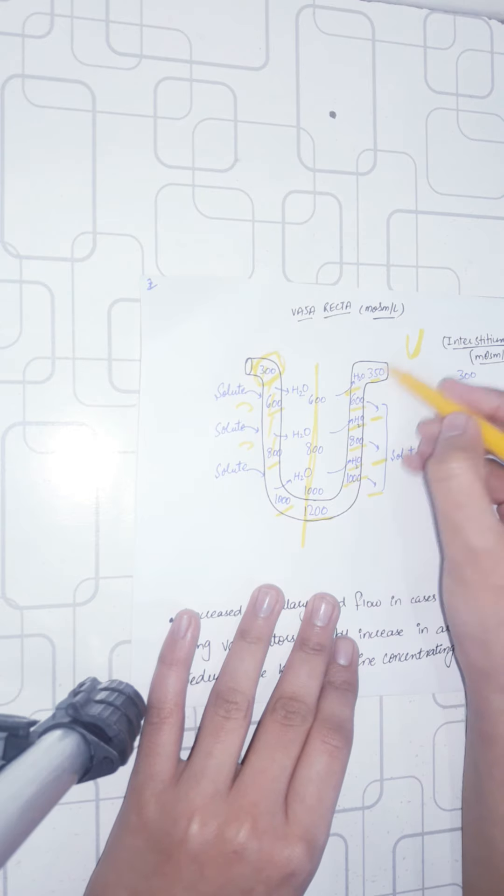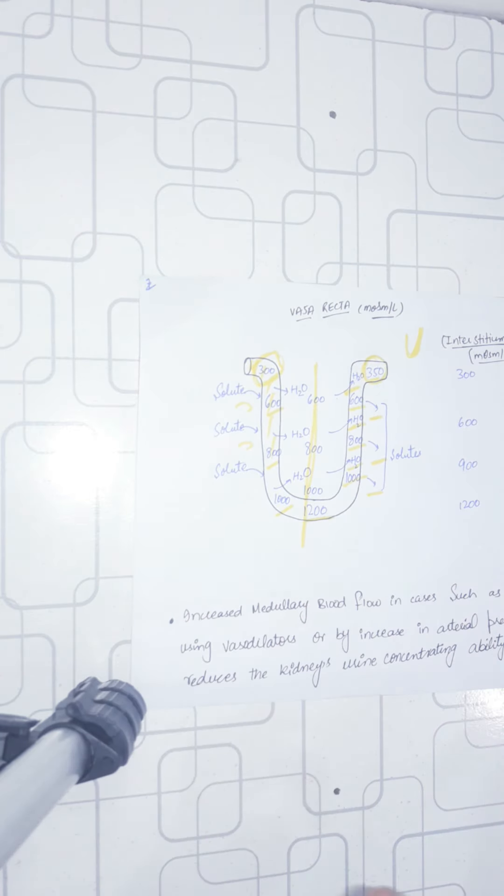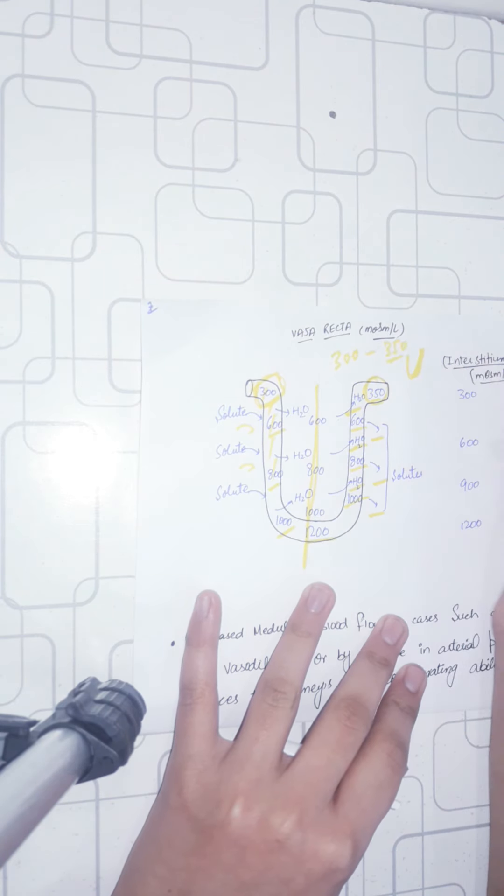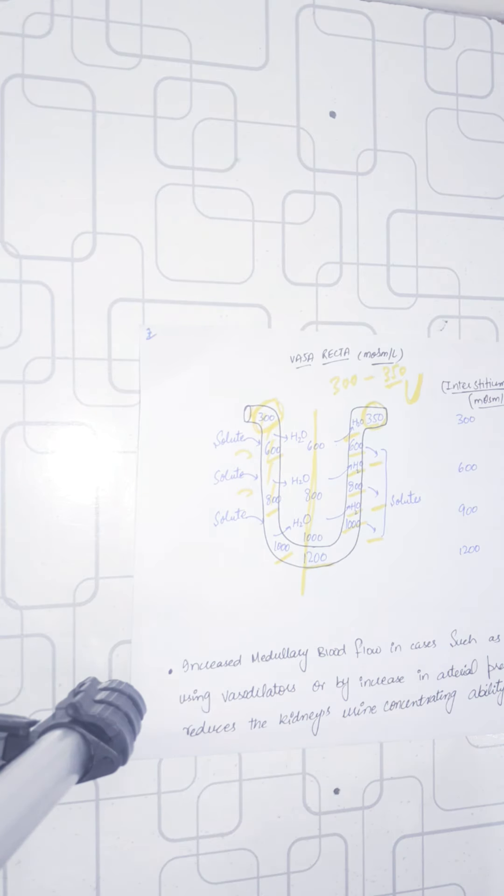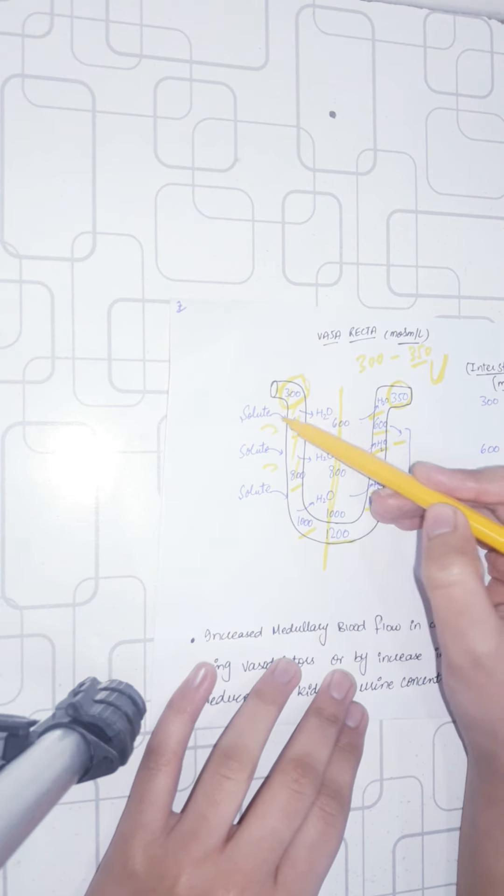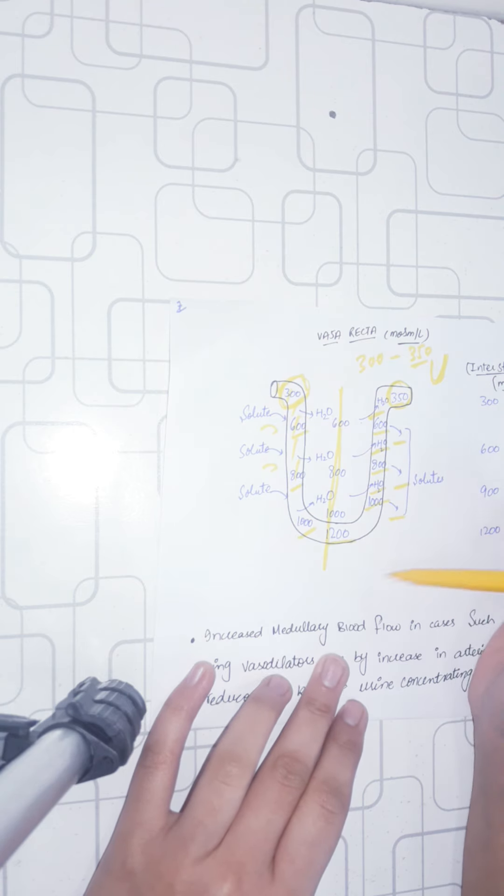From 1200, it goes to 600, then 300. Here it was 300, but when returning it becomes 350. Why 350? Because in the tubules, reabsorption occurs. This minute increase from 300 to 350 means that the fluid and solute which are reabsorbed in the tubules are returned to circulation. You have a counter current exchanger maintaining hyperosmolarity.